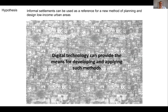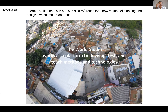How can we achieve environments with this quality? The idea is that digital technology can provide the means for developing and applying these methods. We have developed what we call the World Studio — both a research project and a course that evolved in parallel — as a platform to develop, test, and teach new methods and technologies to tackle the problem of informal settlements.